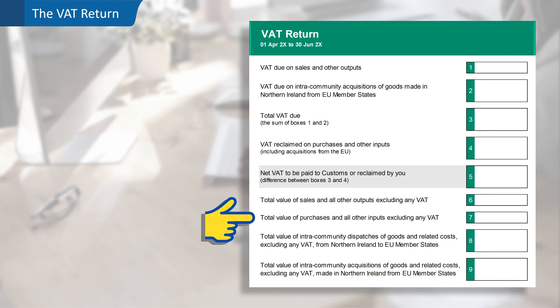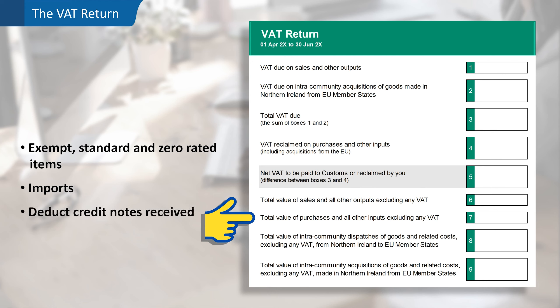Box seven is for the total value of purchases and all other inputs, again excluding any VAT. This will include all exempt, standard and zero rated purchases, as well as any expenses and capital items, and will include imports. The total should also be adjusted for any credit notes received by the business, excluding VAT. However, you should not include items outside the scope of VAT such as wages, PAYE or national insurance contributions, nor should you include drawings and certain other taxes such as vehicle licence duty or business rates.